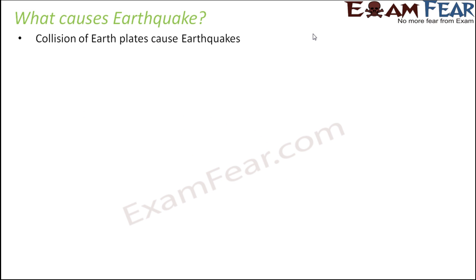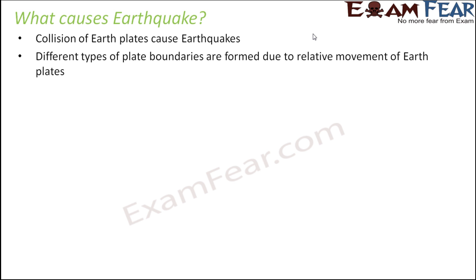Collision of earth plates causes earthquakes. Now, how exactly can the plates collide? There are many different ways in which plates can collide and they can have different consequences. So different types of plate boundaries are formed due to relative movement of the earth plates. We will now look at the various ways by which two plates can collide.